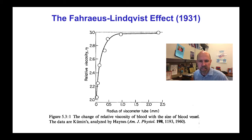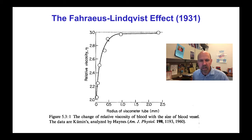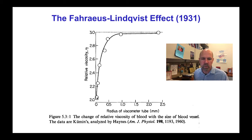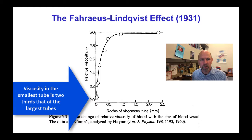Let's start with the Fåhræus-Lindqvist effect. These are experimental data showing that as the radius of the tube falls below about 500 microns, the apparent viscosity of blood flow in the tube actually decreases. For the smallest tubes in these experiments, down around 20 microns in diameter, the viscosity is only two-thirds of that in a one-millimeter tube.